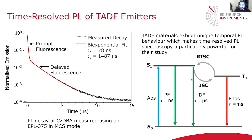Due to the reverse intersystem crossing process, TADF emitters have unique temporal PL behavior, which makes time-resolved photoluminescence very powerful to study them. When a TADF emitter is excited, it's promoted from the singlet ground state to the singlet excited state. It can then either undergo prompt fluorescence, which occurs on a nanosecond timescale, or undergo intersystem crossing followed by reverse intersystem crossing back to the singlet excited state with delayed fluorescence. You get bi-exponential behavior in the PL decays.